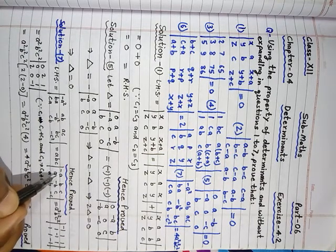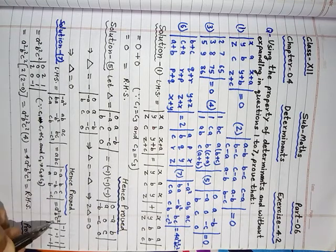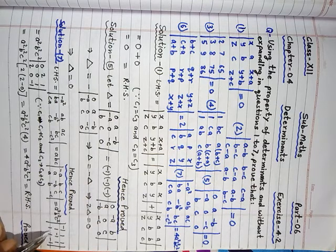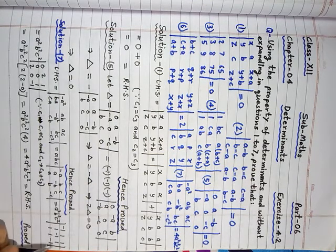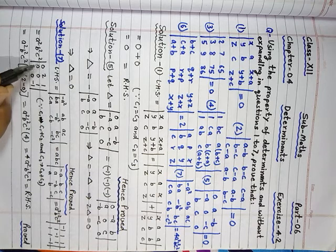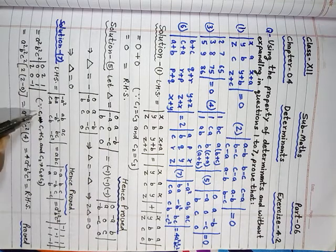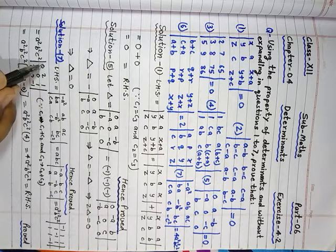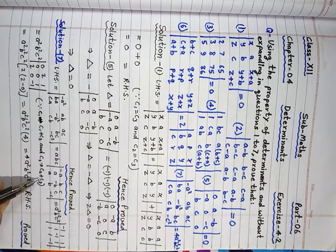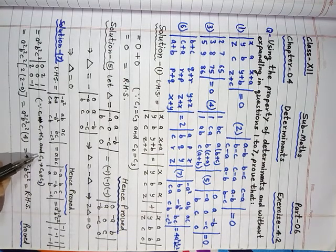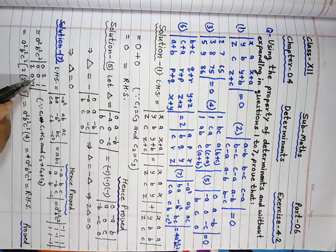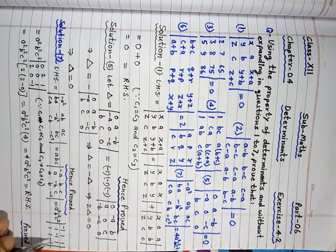A take by first column, b take by second column, and c take by third column. Then, the remaining determinant is this after taking common: minus 1, 1, 1, 1, minus 1, 1, 1, 1, 1, minus 1. And now, a squared, b squared, c squared, and if you add c1 plus c2, then this column comes. And if you add c2 plus c3 and put the place of c2, then this column comes. And third column is remaining same.